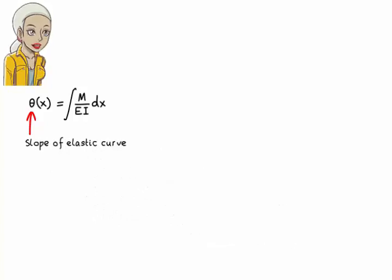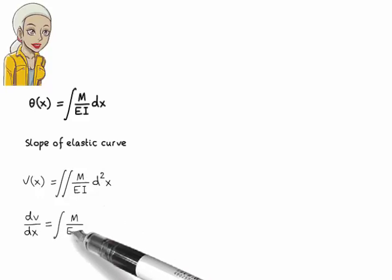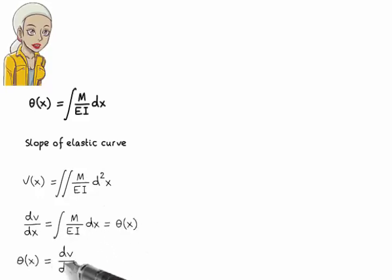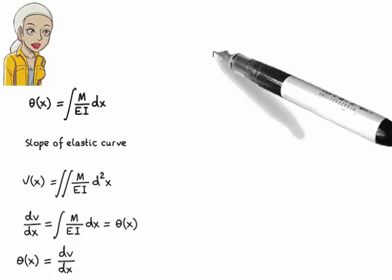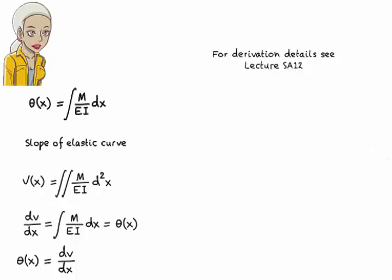This is called the slope equation. It defines the slope of the elastic curve in terms of x. Observe that theta x equals dv/dx, since v is defined as the second integral of M over EI. Here, I'm going to use these equations without deriving them. If you want to learn how they came about, see lecture essay 12.